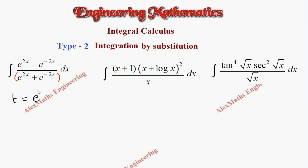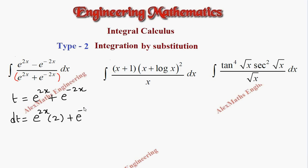Let t equal to e^(2x) plus e^(-2x). Now we have to find dt, which is the differentiation of this: e^(2x) differentiation is e^(2x) into 2, and e^(-2x) differentiation is e^(-2x) into minus 2, dx. Now we have to take 2 as common.